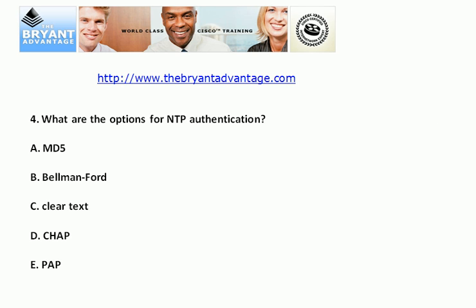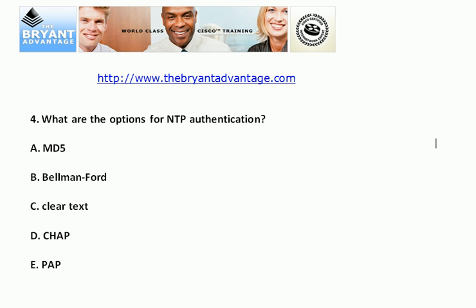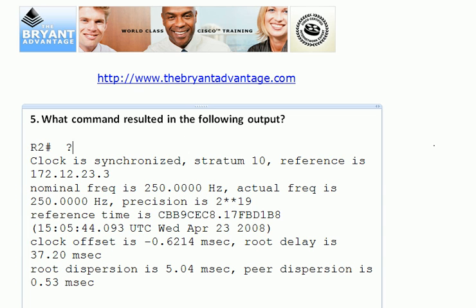As for NTP authentication options, the only option available is MD5. It's interesting because even though you only have one option, you still have to specify it — and you set it with the NTP authentication key command. For question five, the command can be tough to identify, but it's the first command you want when troubleshooting and verifying NTP: show NTP status.